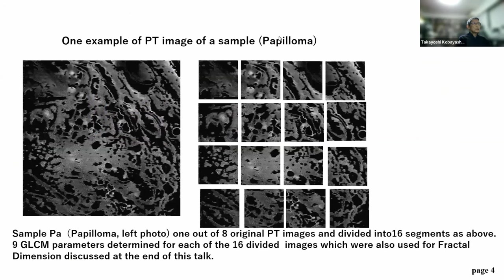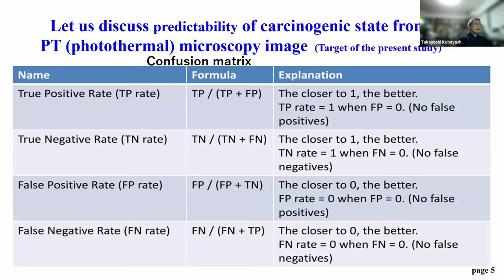One example of a PTM image is a sample of papilloma, which is cancer-relevant cells from mouse. We segmented the image into 16 segments and studied eight original PTM images, altogether more than 100 images in detail. The purpose is to discuss the predictability of carcinogenic state from a photothermal microscope image — specifically, whether we can identify the stage of cancer from this kind of sample.